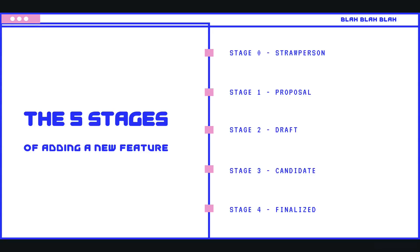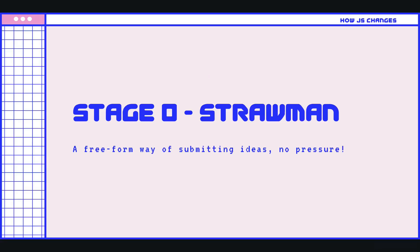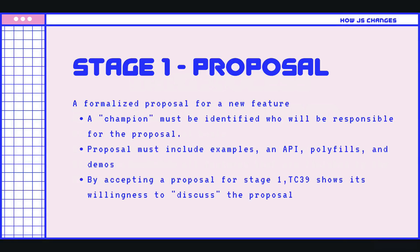For a feature to become part of the spec, it must go through five different stages. Stage zero, the straw person stage, is the least structured — it's just a free-form way of submitting ideas, not much pressure, not many rules about what you must include. It's just a starting point. Then we move to stage one, which is a much more formalized proposal. A champion must be identified — someone who is a member of TC39. The proposal must also include examples, how it should work, an API, polyfills when needed, and demos. When TC39 accepts a proposal for stage one, it shows willingness to discuss the proposal, but it does not mean in any way that the feature is set to be included. It's not a guarantee or a promise.